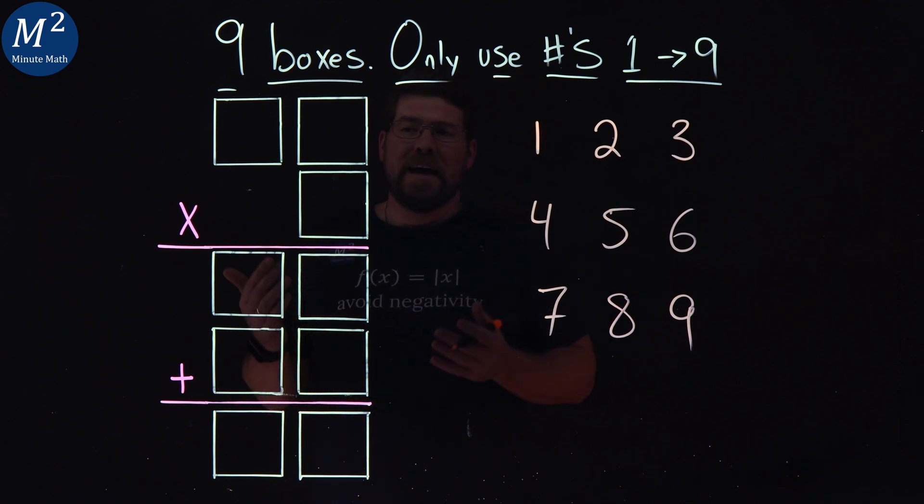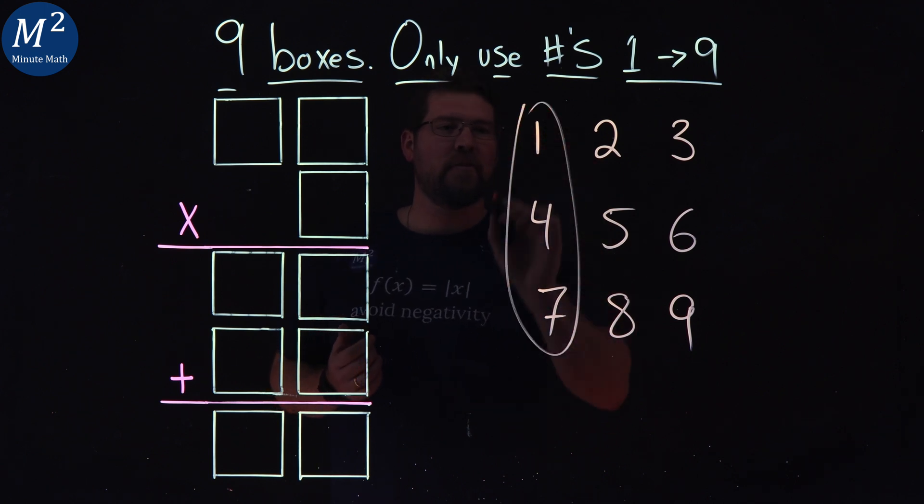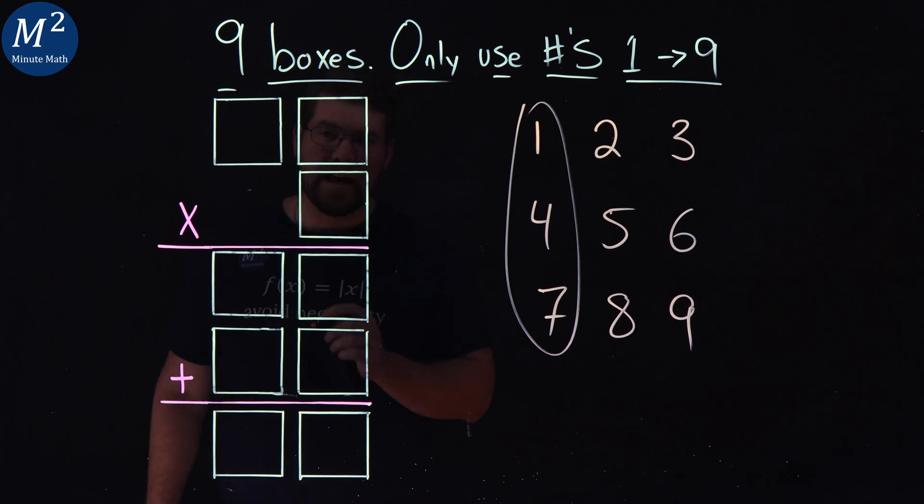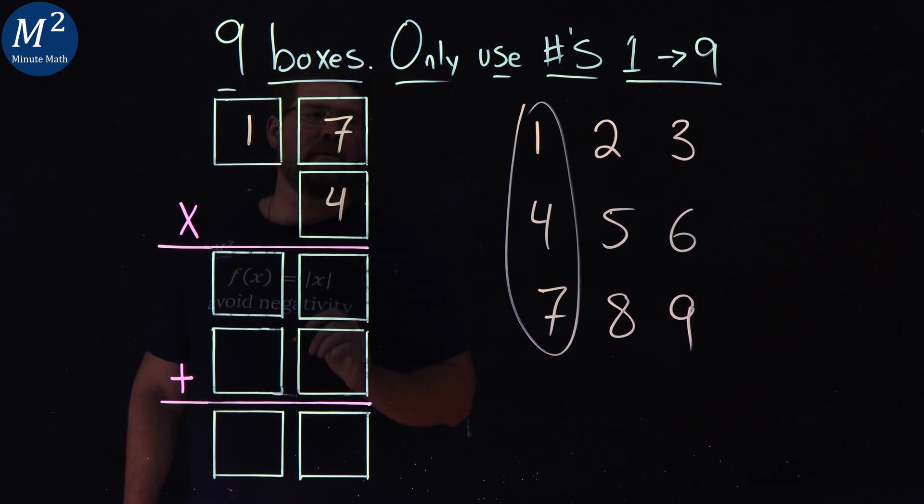Now from here, eventually we have to just take a guess. And since I know the answer, we're going to do that as well. Let's deal with the first three numbers right here. One, four, and seven. I'm going to put the one here and the seven and the four.